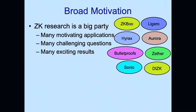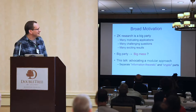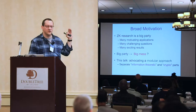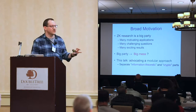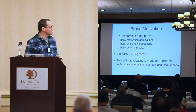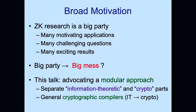The nature of big parties is that they often lead to a big mess — an inevitable byproduct. Part of the mission here is to help clean up that mess and make room for a new kind. Towards this end, a modular approach is advocated whose main goal is to maximize the separation between the information-theoretic parts of the zero-knowledge proof and the cryptographic parts.